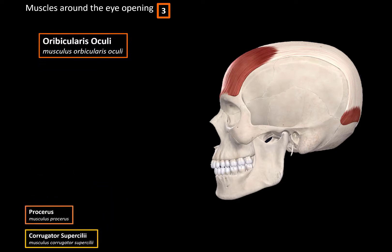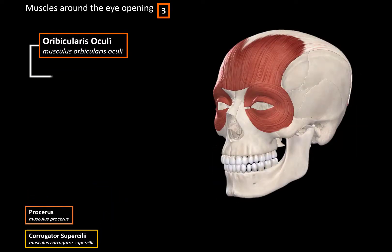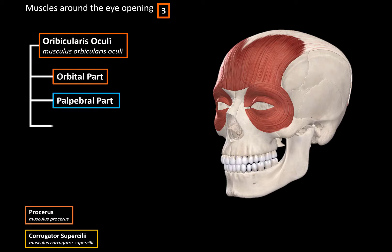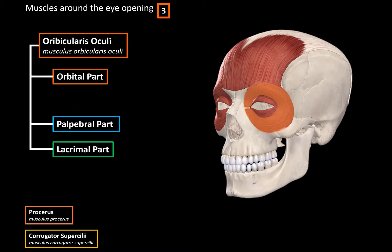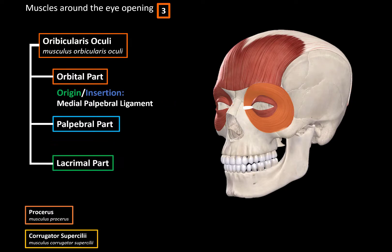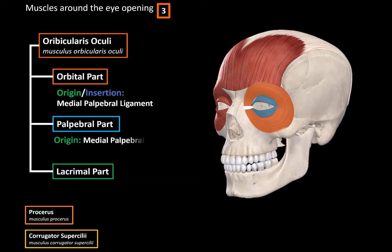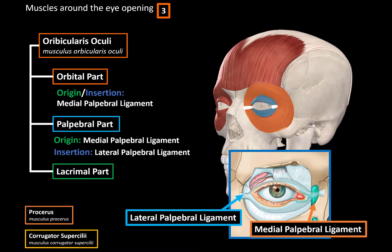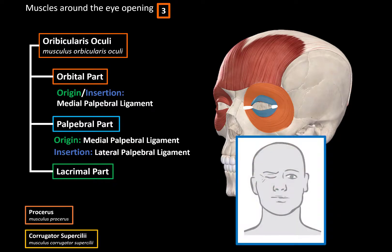The orbicularis oculi is a circular muscle consisting of three parts: the orbital part, which is the peripheral part going around the eye; the palpebral part, which covers the eyelids; and the lacrimal part for the lacrimal sac. The orbital part originates from the medial palpebral ligament, goes around the whole eye in a loop, and inserts at the medial palpebral ligament again. The palpebral part originates from the medial palpebral ligament and inserts at the lateral palpebral ligament. The function of these two parts is to firmly close the eyelids and create wrinkles extending outwards from the lateral angle of the eye.